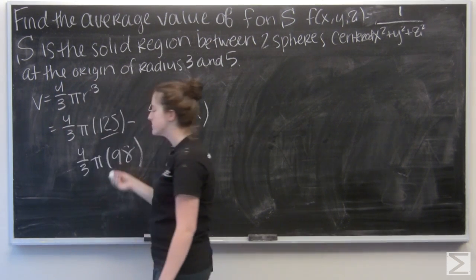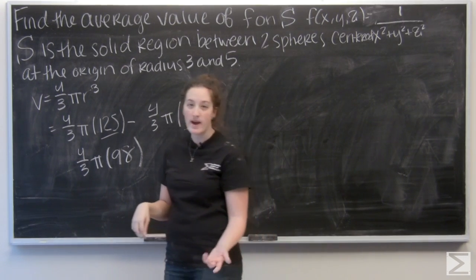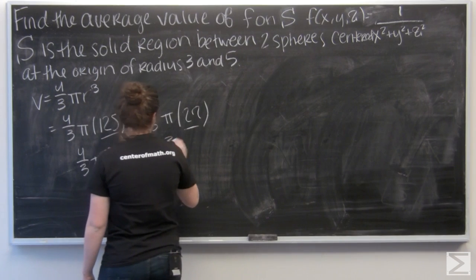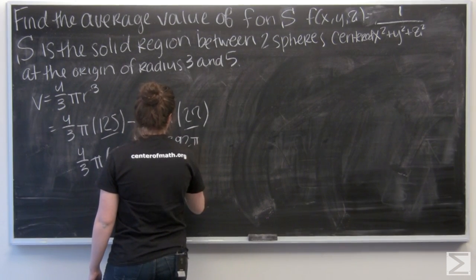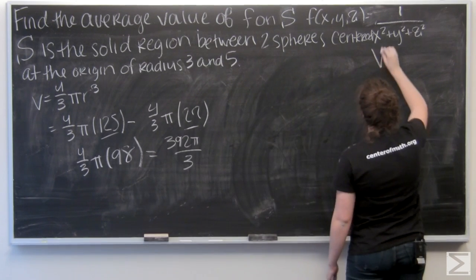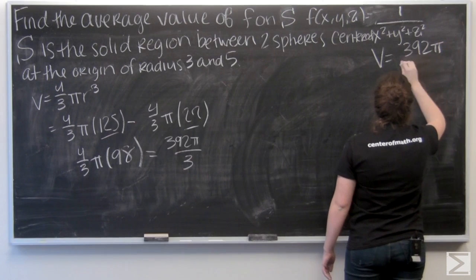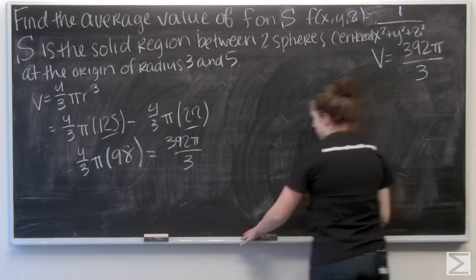So I have 4 thirds pi times 98, which is going to give me 392 pi over 3. You write this over here, out of the way. Go ahead and erase.